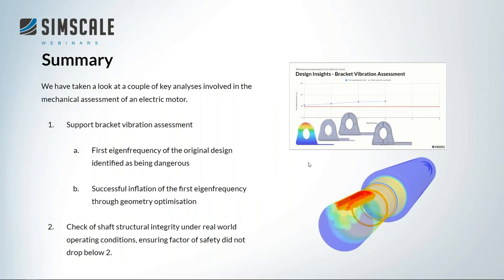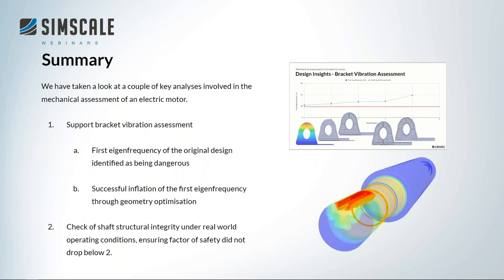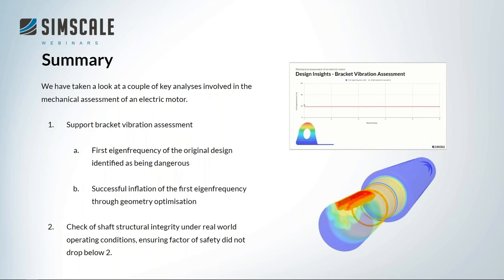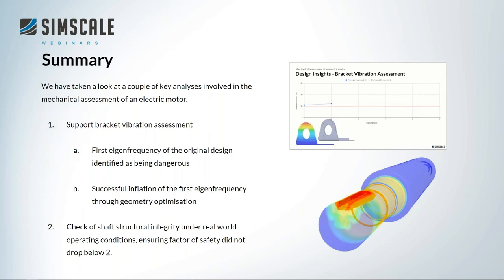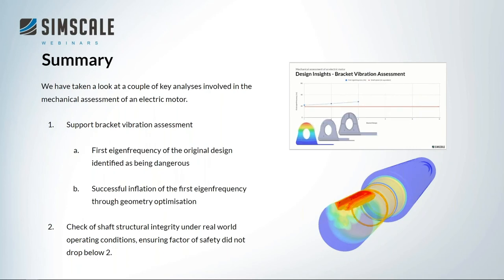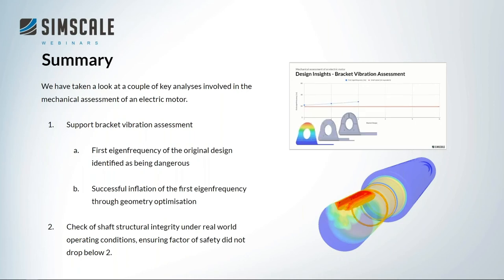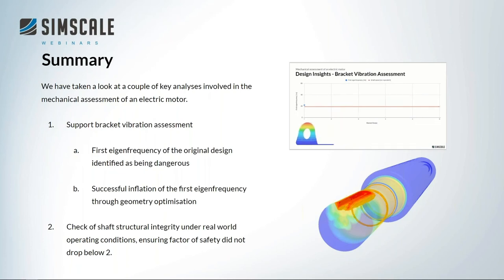To summarize what we've looked at today: we examined the key analyses involved in mechanical assessment of an electric motor. First, the vibration assessment of the bracket, where we identified the first eigenfrequency as dangerous because it was so close to the shaft speed, then successfully raised the first eigenfrequency through geometry optimization to mitigate that danger. Second, we checked the shaft's structural integrity under real-world loading conditions, ensuring the factor of safety did not drop below two.